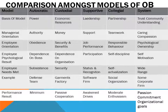Passive cooperation is present in the custodial model, awakened drives in the supportive model, moderate enthusiasm and passion in the collegial model, and passion and commitment to organizational goals in the systems model — because everything is so well-structured in that model.